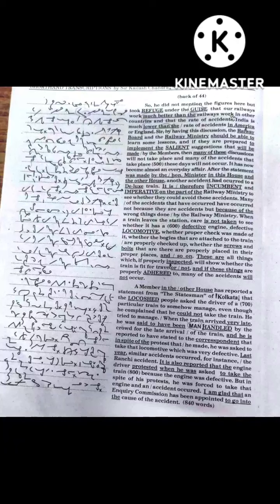whether the bogies that are attached to the train are properly checked up, whether the screws and bolts that are there are properly placed in their proper places and so on. These are all things which if properly inspected will show whether the train is fit for travel or not and if these things are properly adhered to many of the accidents will not occur.